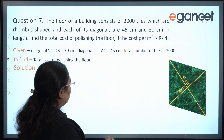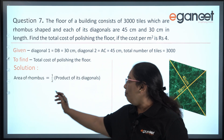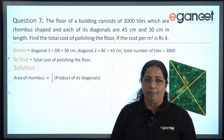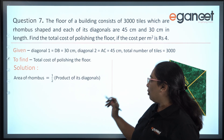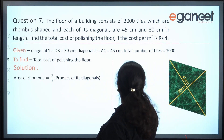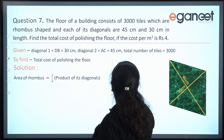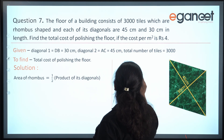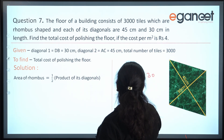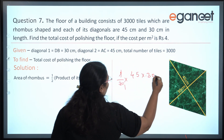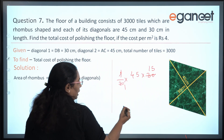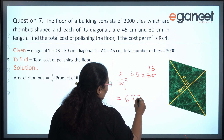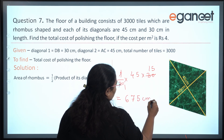The area of a rhombus is equal to half the product of its diagonals. So the area of this rhombus equals half into 45 into 30. Half of 30 is 15, and 15 into 45 equals 675 centimeter square.